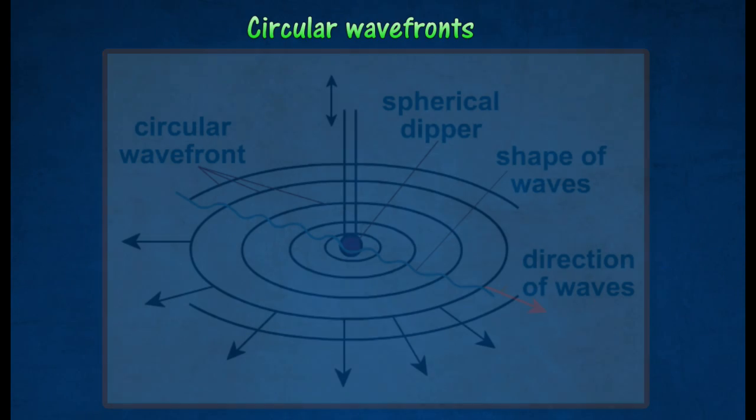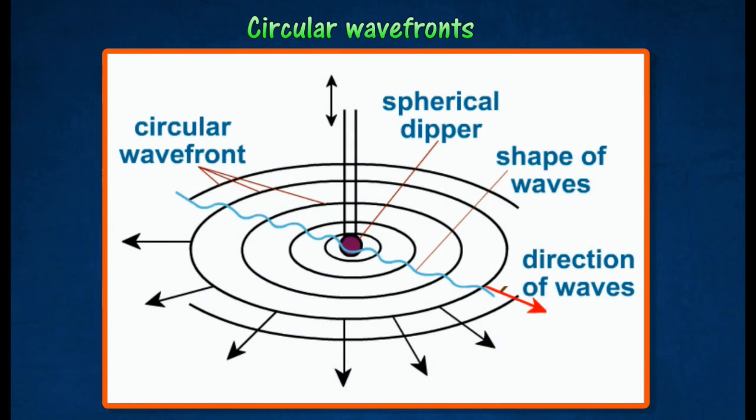By touching the water surface with finger or spherical dipper, crests of circular waves can be seen moving outwards from the source of disturbance. Wavefronts are lines or surfaces joining all the crests, or points vibrating at the same phase and of equal distances from the source of the waves.